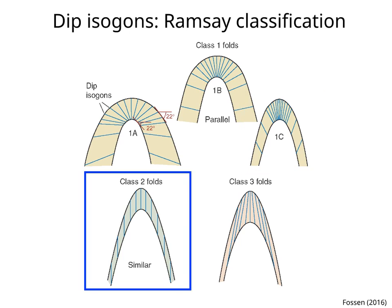Class 2 folds have divergent dip isagons. The curvature of the outer arc is equal to the curvature of the inner arc. Isagons are parallel to the axial surface trace. The true thickness is maximum at the hinge, and the vertical thickness remains constant around the fold. Such folds are called similar folds.